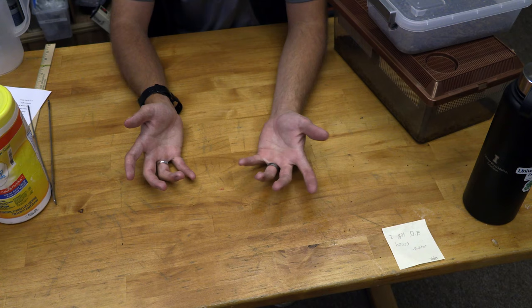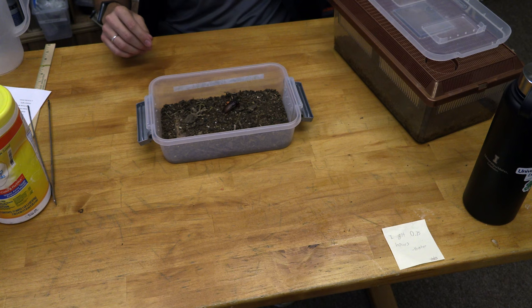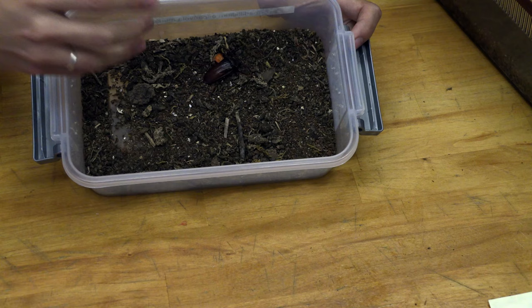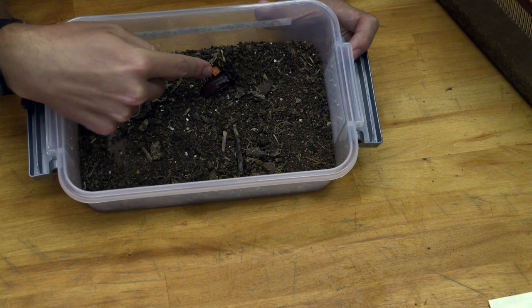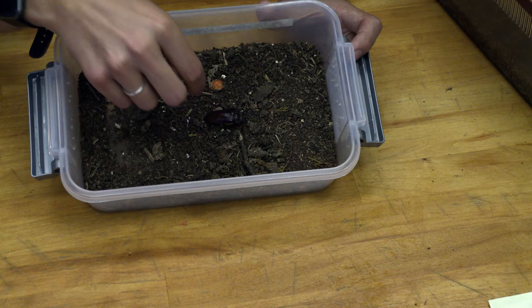So the first one we're going to take a look at is this California prionis or California root borer. This one is going to be the smaller specimen. I'm going to go ahead and take him out of the cage. This species in particular, when you poke it, makes this funny noise. He likes to kick his legs back and try to kind of threaten you. Let's get him onto the table so we can see him a little bit better.